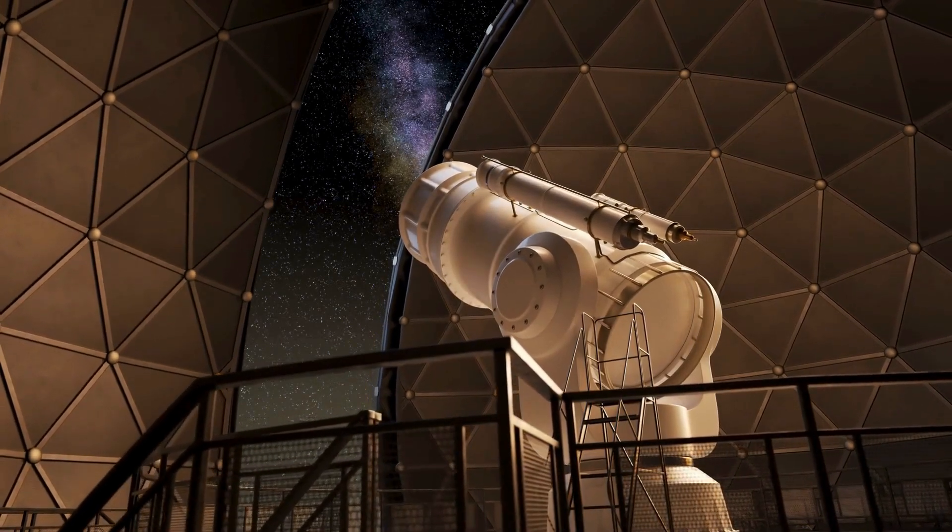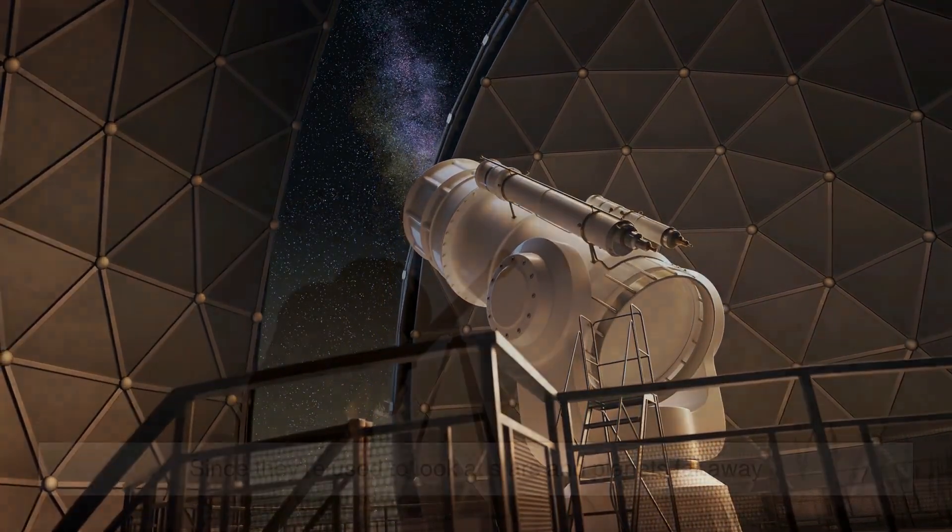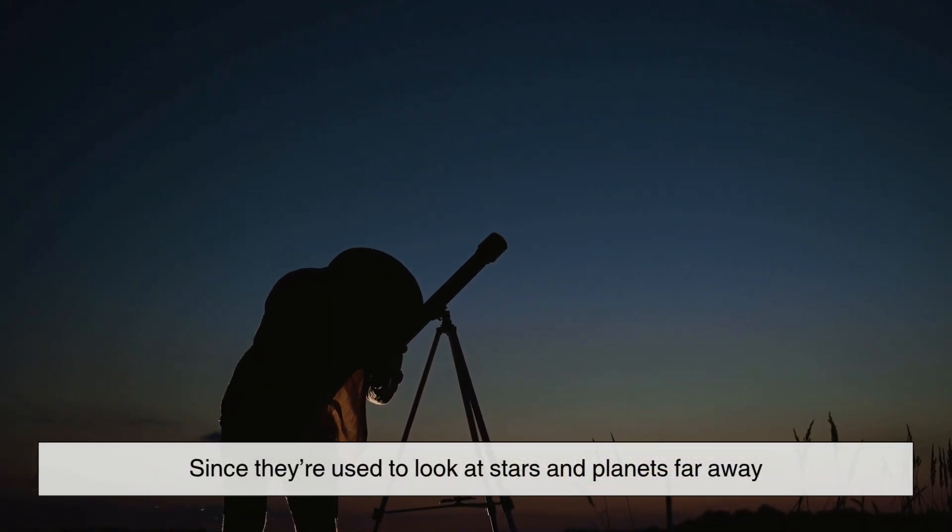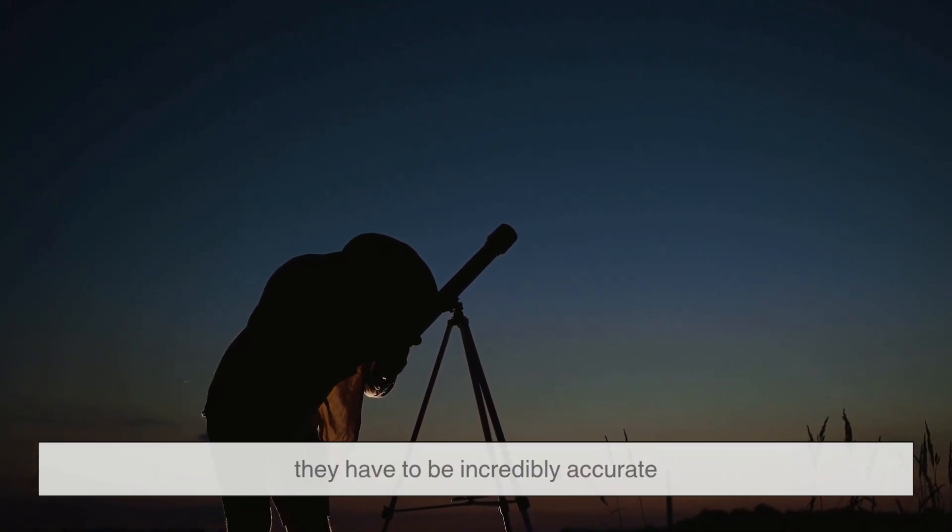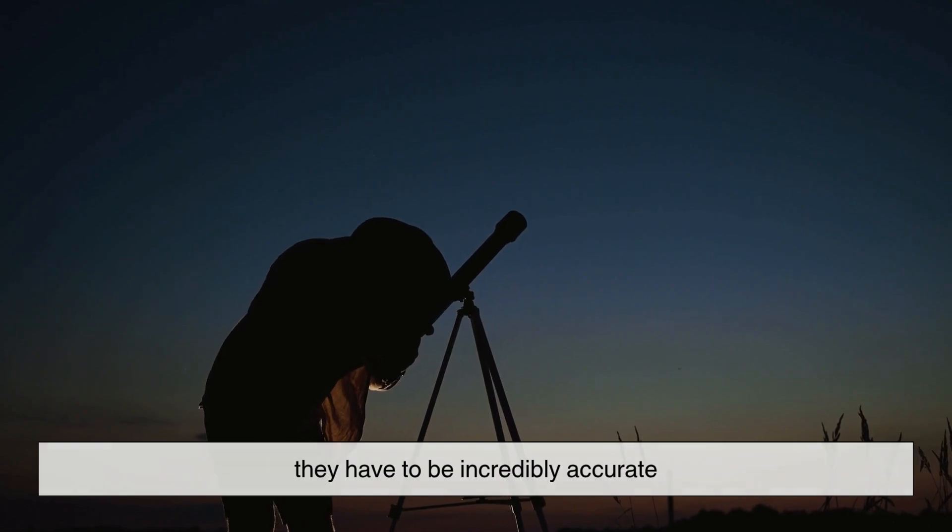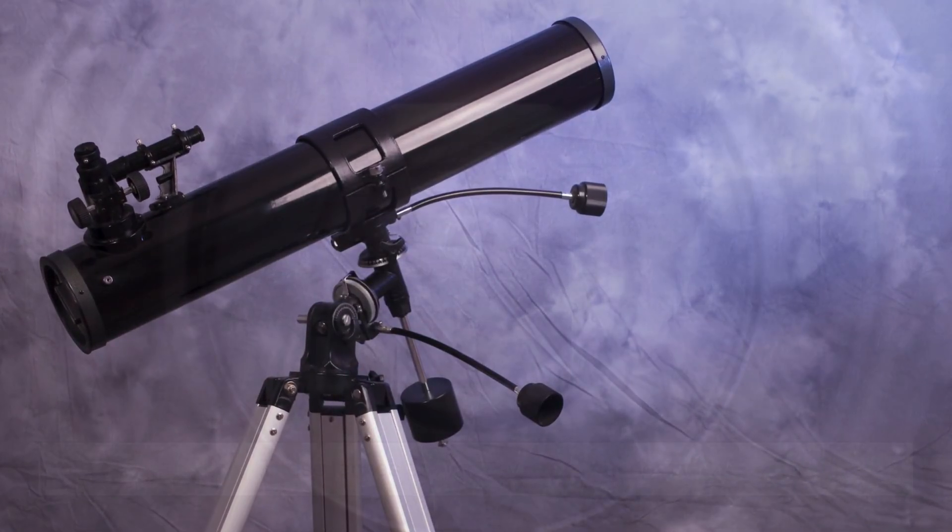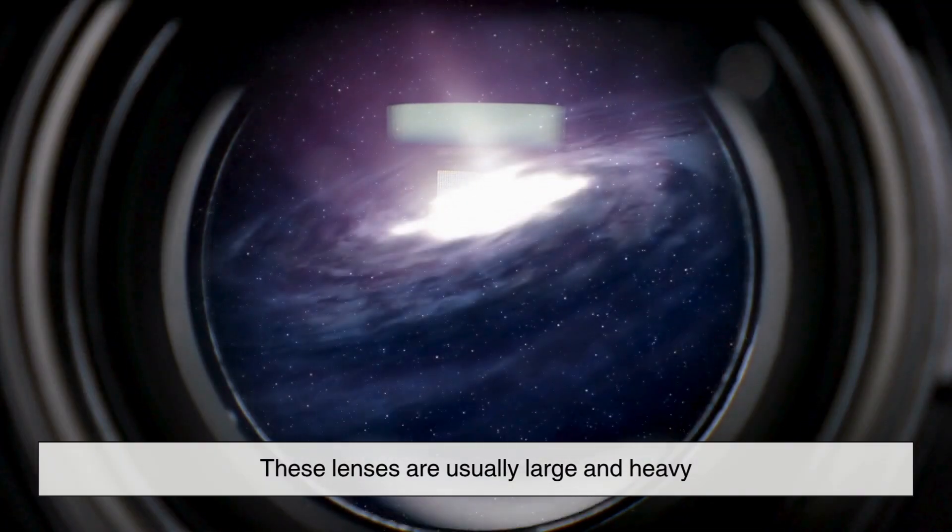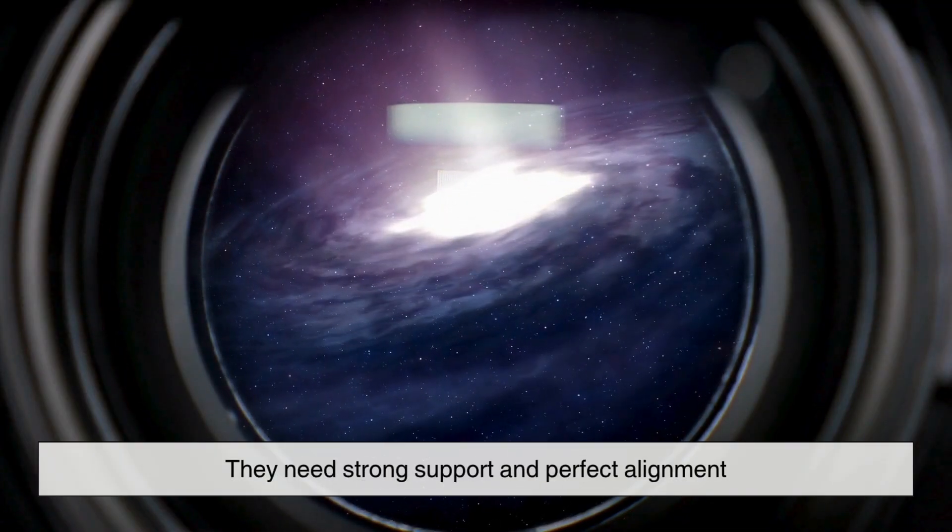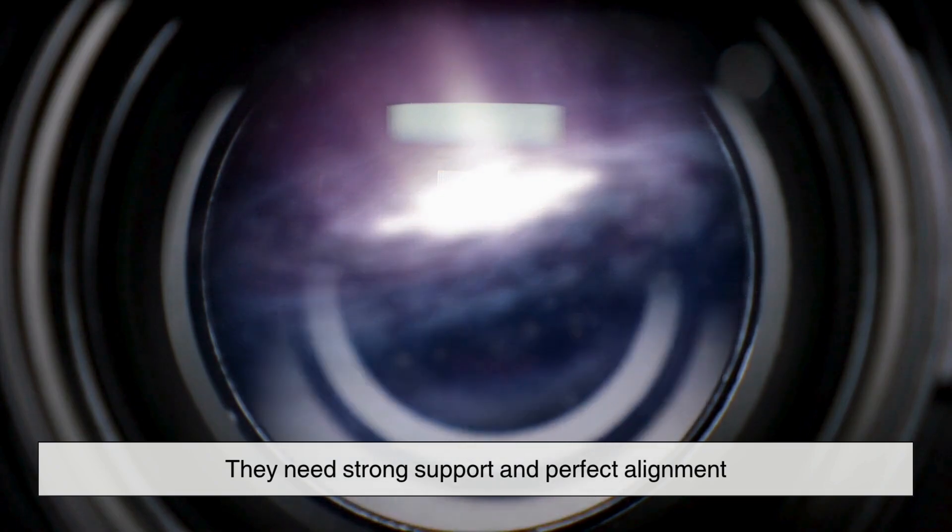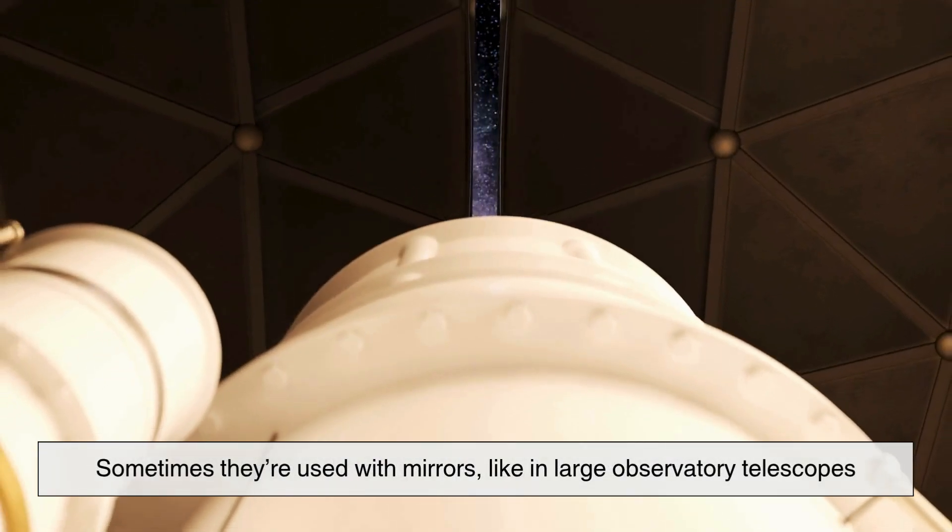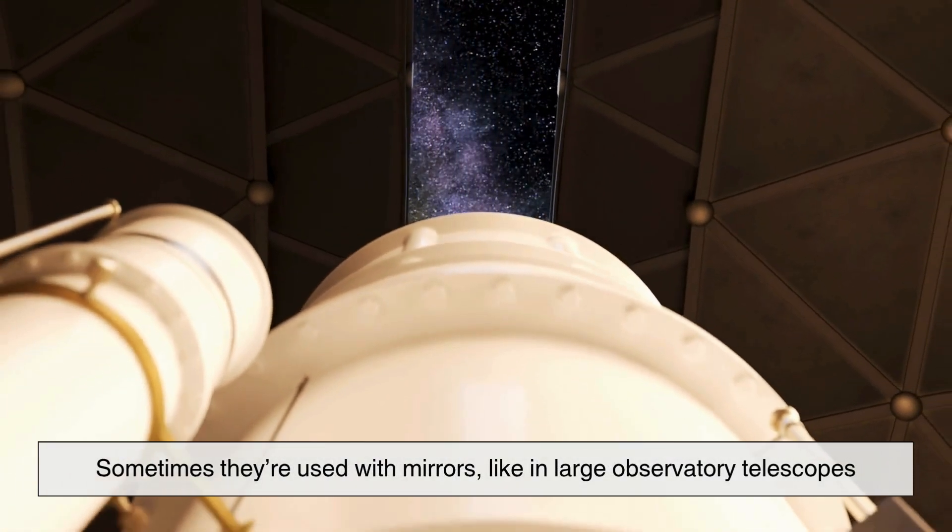Telescope lenses take things to a whole new level. Since they're used to look at stars and planets far away, they have to be incredibly accurate. Even a tiny flaw could mess up the view. These lenses are usually large and heavy. They need strong support and perfect alignment. Sometimes they're used with mirrors, like in large observatory telescopes.